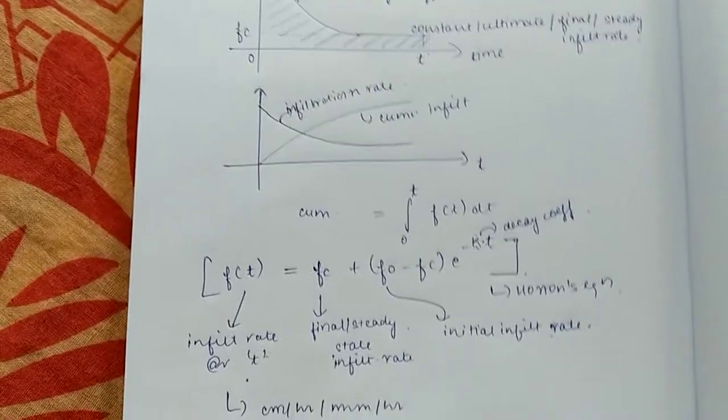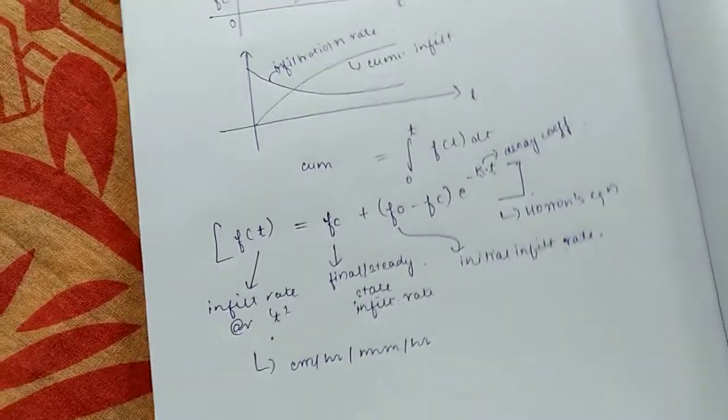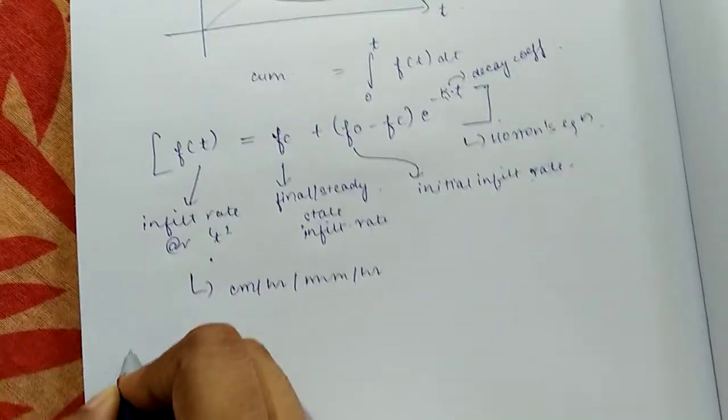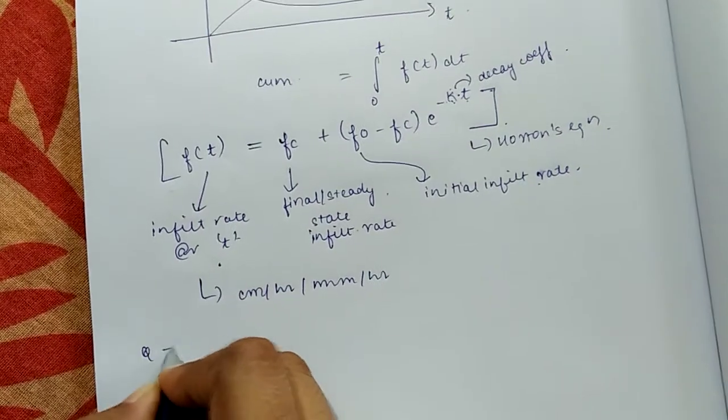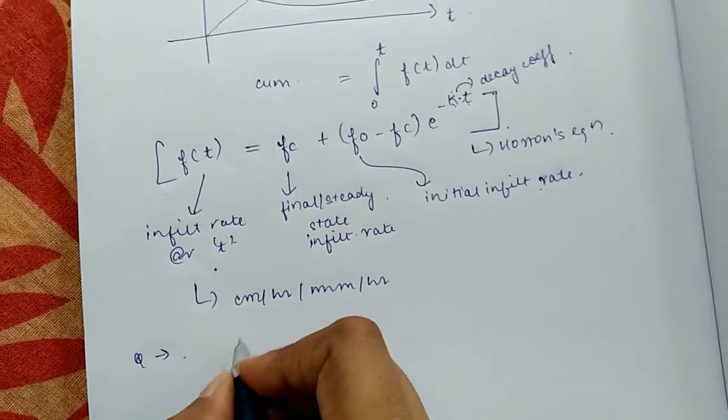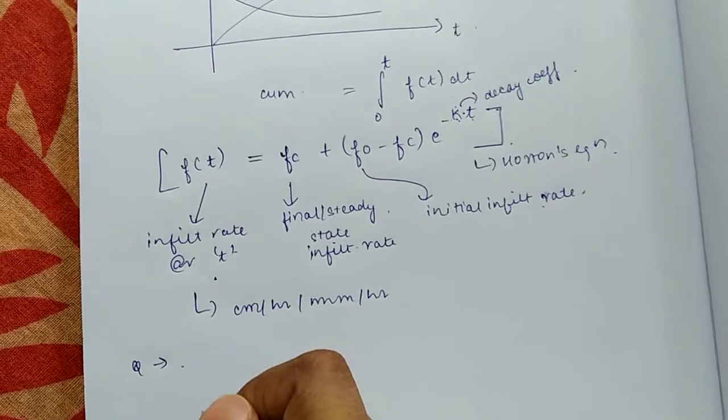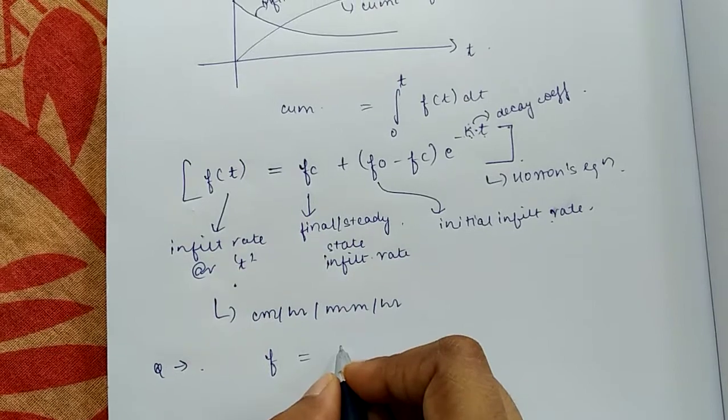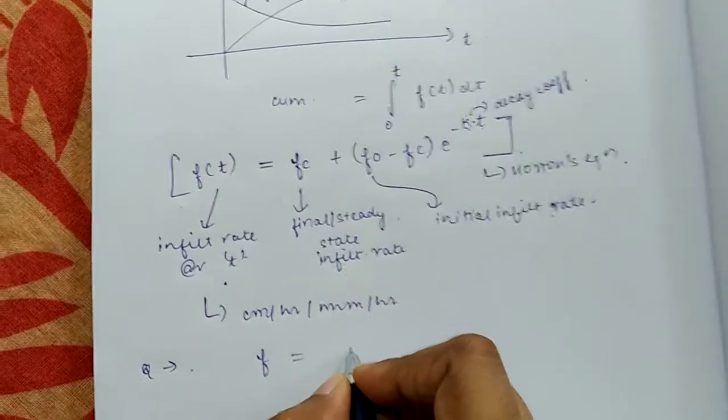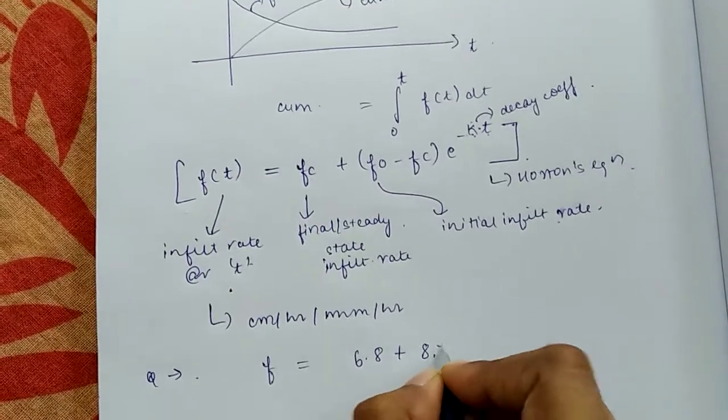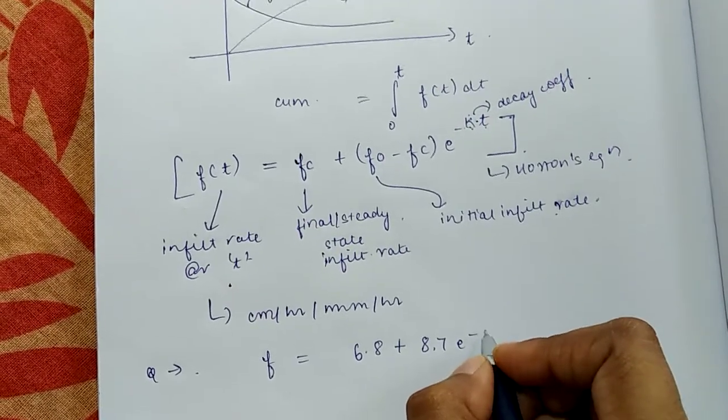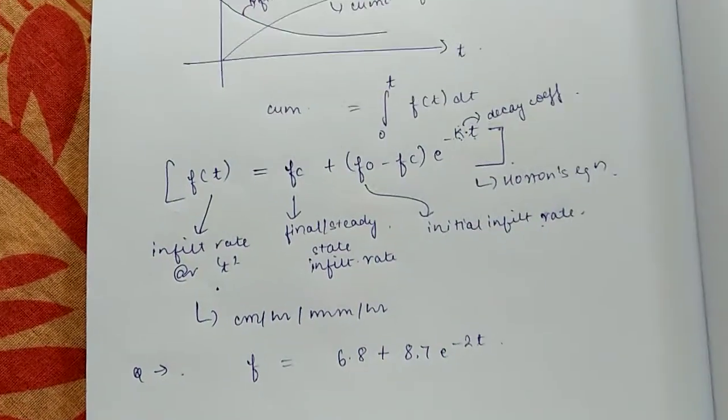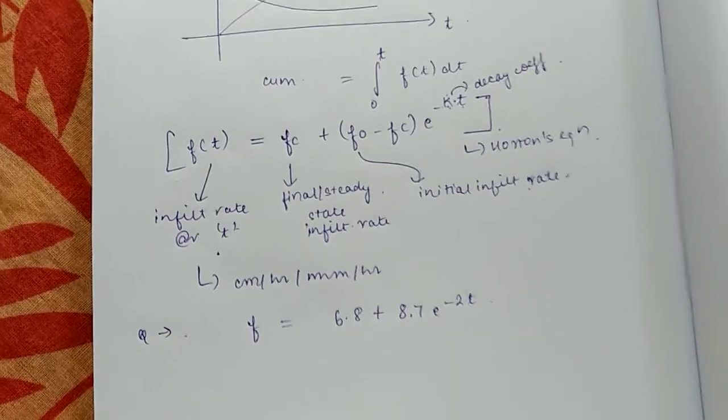This is for Horton's infiltration equation. Now we will see one or two numericals based on this. Suppose the question is: infiltration equation for a given catchment is expressed as f equals 6.8 plus 8.7 e to the power minus 2t. This equation is similar to Horton's equation.